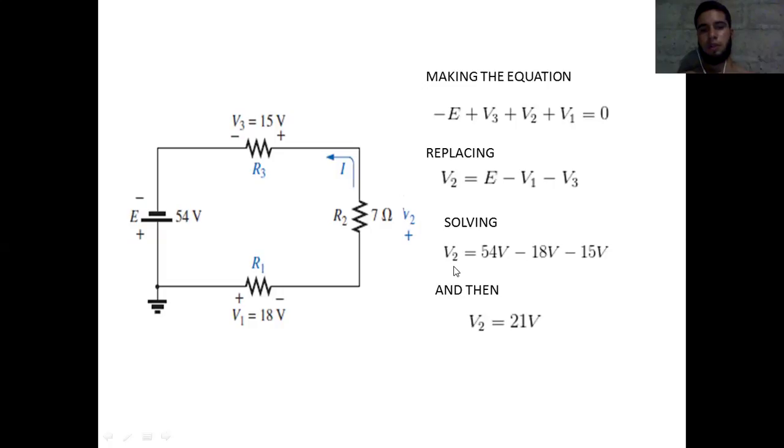Solving this equation: V2 equals 54 volts minus 18 volts minus 15 volts. And then we have V2 equals 21 volts.